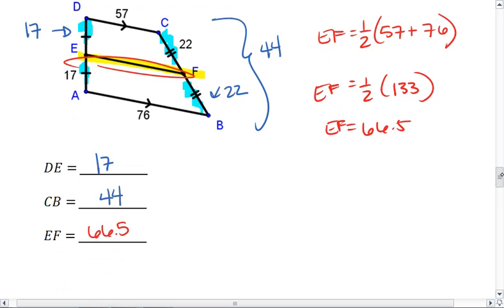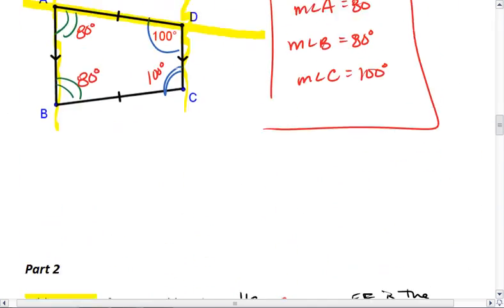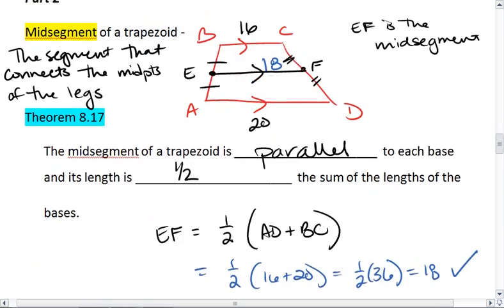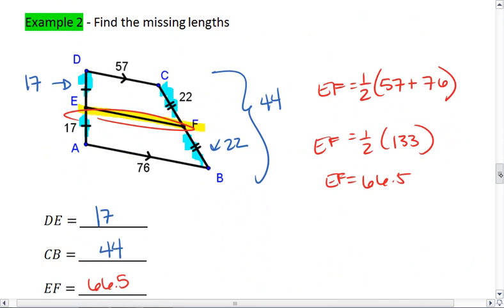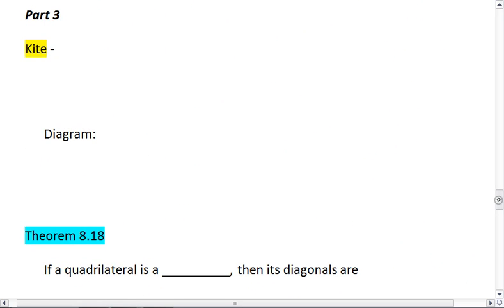And that's it. OK, if you are comfortable with midsegments, the fact that a midsegment is parallel to the two bases and is half the length of the sum of the bases, and you can solve problems, then go on to part 3, where we talk about kites.